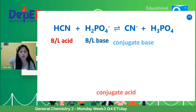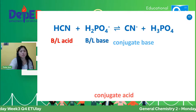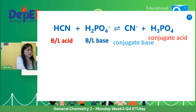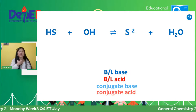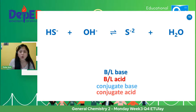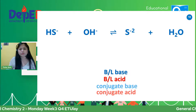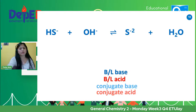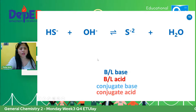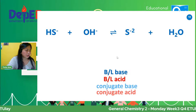And the Bronsted-Lowry base is the H2PO4, at ang kanyang conjugate acid yung nadagdagan — the one that accepted the proton. Malapit na mag-6, ang bilis lang talaga ng oras. Next, we have HS negative plus OH to form S negative 2 plus H2O. So, what is our Bronsted-Lowry acid?